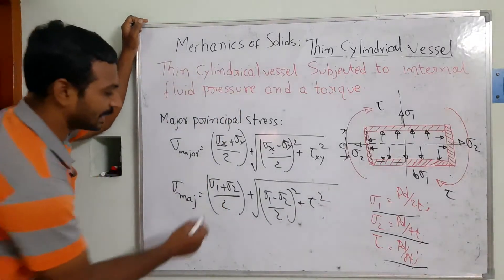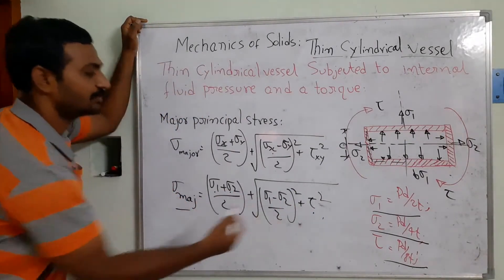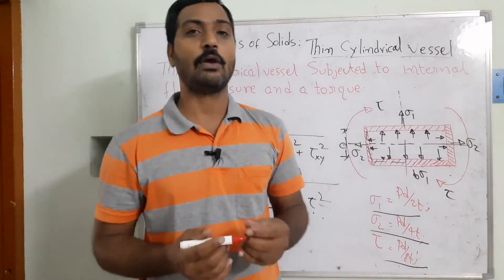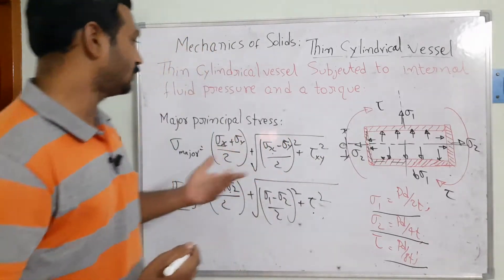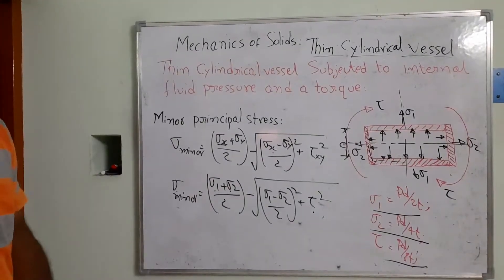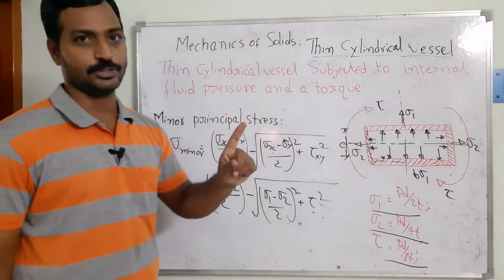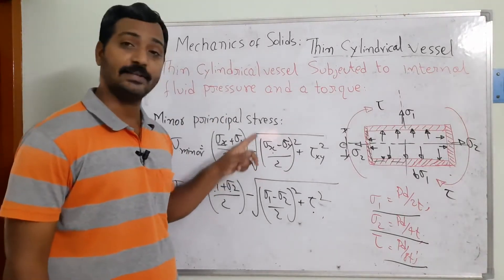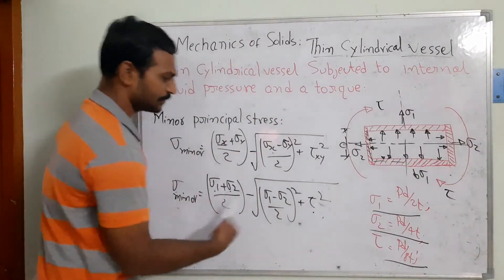By substituting σ1, σ2, and τ into this equation, we can find the diameter of the component and design accordingly. Next, we look at the minor principal stress. The minor principal stress equation is similar to the major, except it uses a negative sign instead of a positive sign before the square root term.